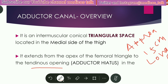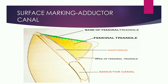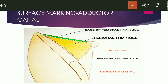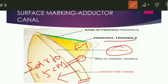Now showing the surface marking of the Adductor Canal. Here we can easily identify where the Adductor Canal is located. You can see the apex of the femoral triangle is the starting point of the Adductor Canal, and it ends at the tendinous opening — the Adductor Hiatus — under the Sartorius muscle.